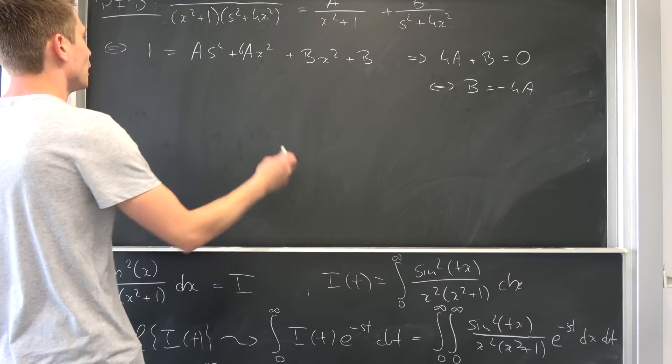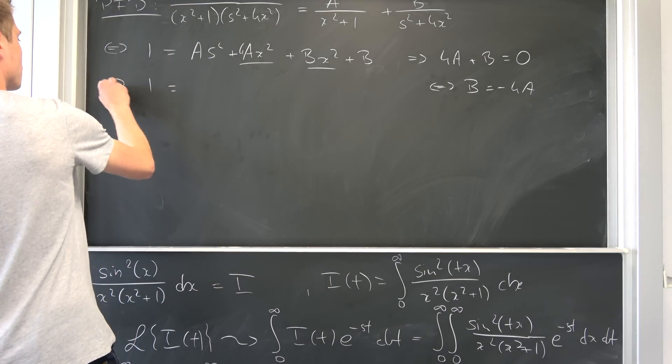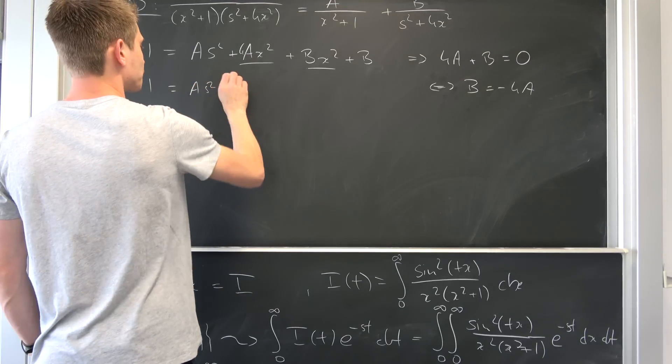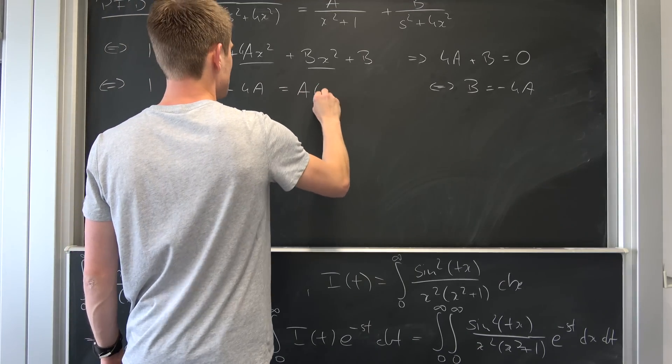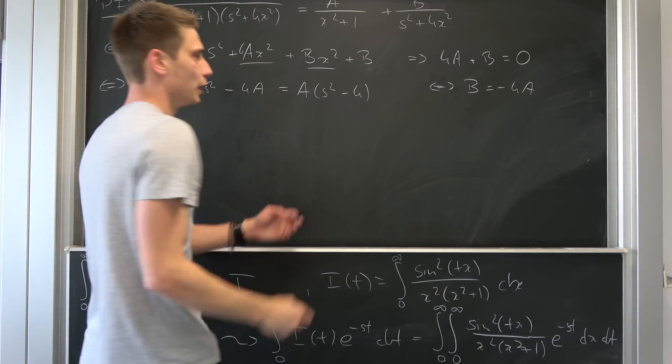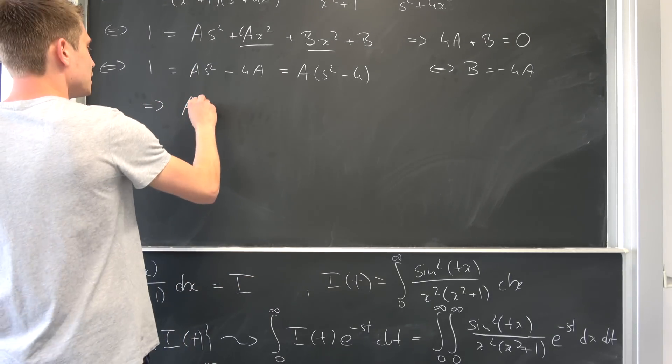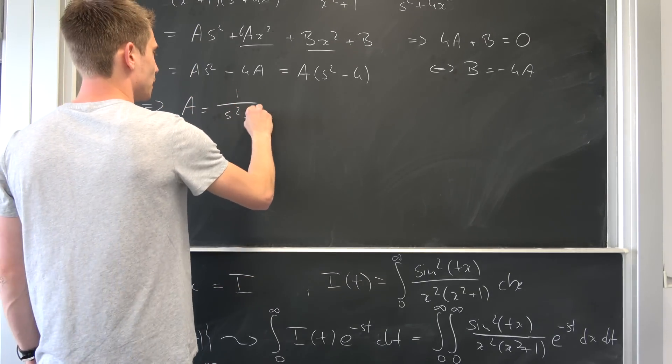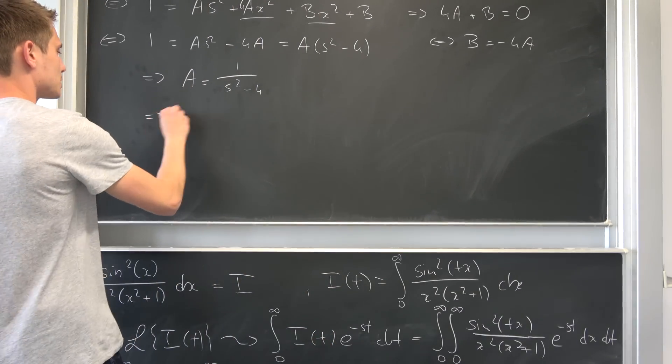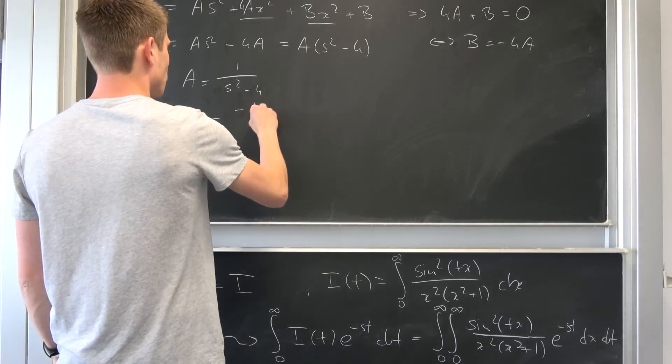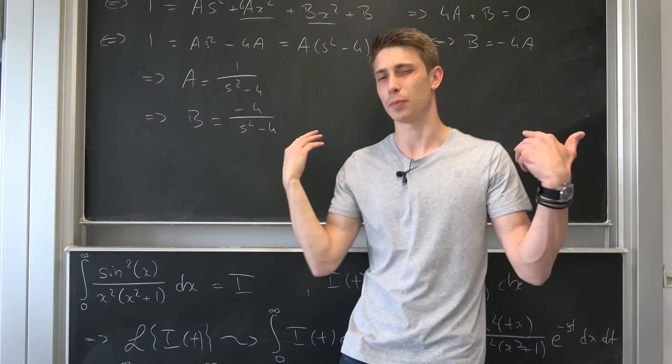Well, doesn't that we cancel out basically, and what we have now is that 1 equals to a s squared minus 4a. We can factor out this a so now it's a times s squared minus 4, and we're dividing both sides by s squared minus 4 that equal to 0. It's going to leave us with a equals to 1 over s squared minus 4. And now we can plug this into the condition for b, so that also means that b is now equal to minus 4 over s squared minus 4. And then we are done with the partial fraction decomposition and we can plug everything in.